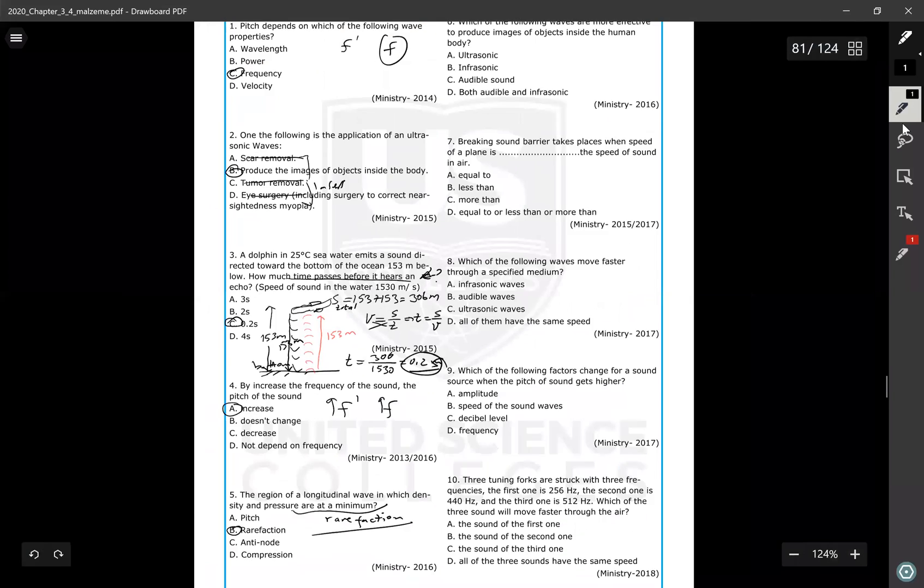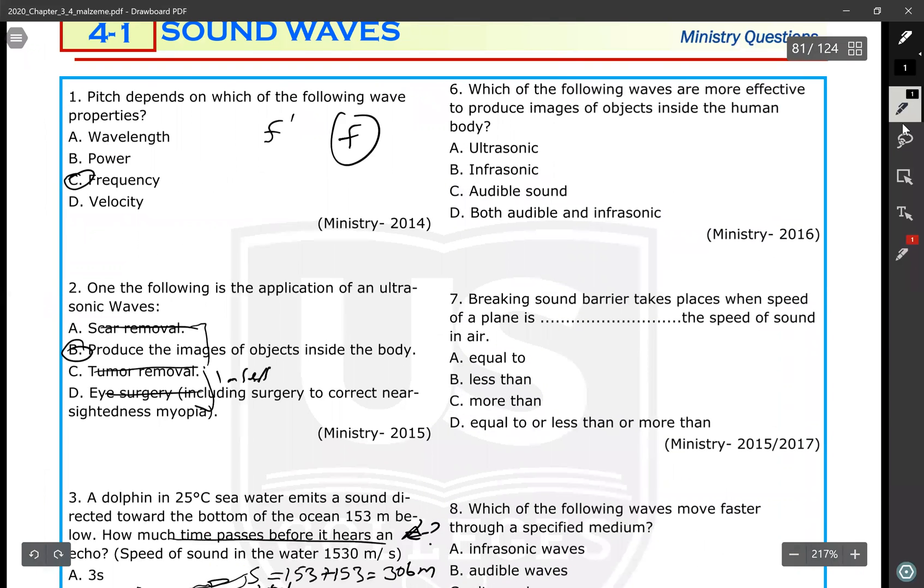Next question, question number six: which of the following waves are more effective to produce images of objects inside the human body? It's a definition. They gave the definition and asked the name. So ultrasonic sound waves are used to produce images inside your body.